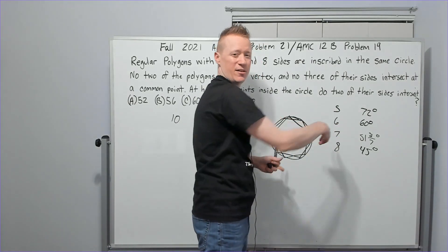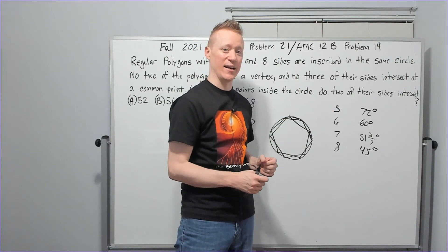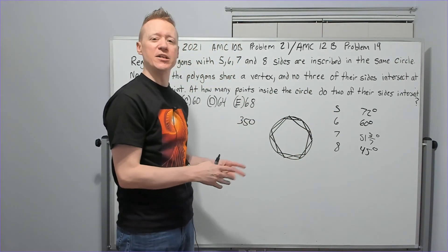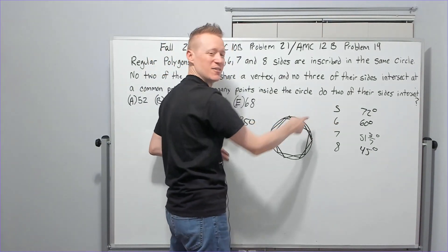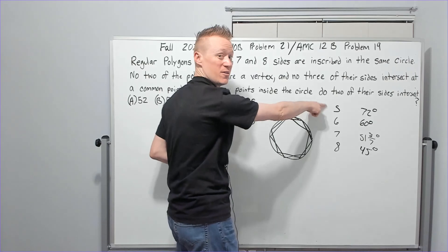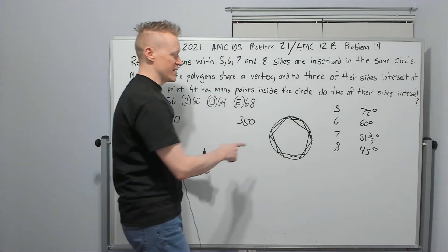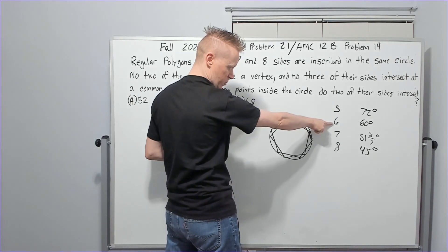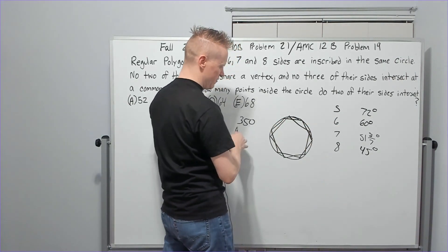So I could never have two consecutive vertices of the pentagon that don't hit at least one side. Now again, the reverse might not be true, but I don't need to worry about it. I don't have to worry about where the 6-sided polygon hits the 5-sided. If I just think about where the 5-sided hits the 6-sided, that's going to give it to me.